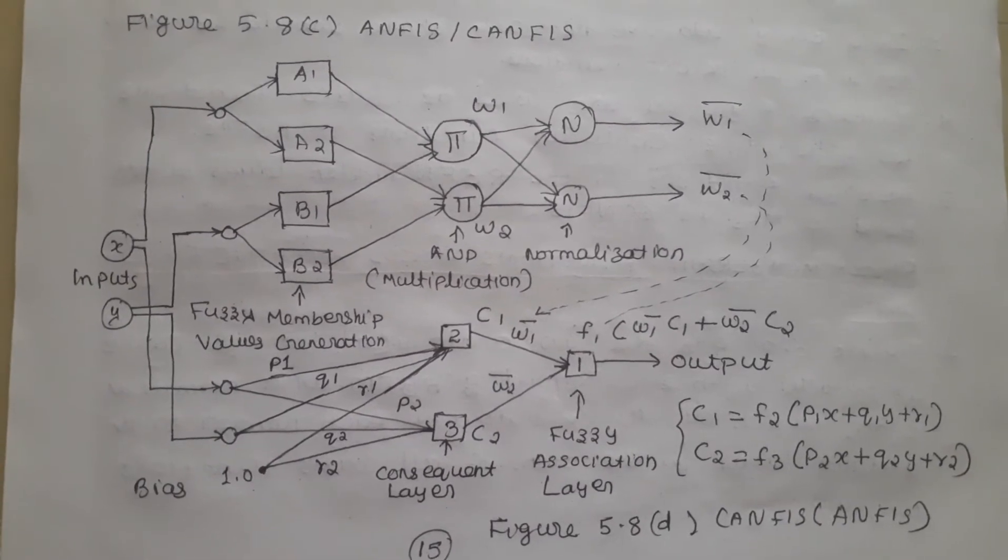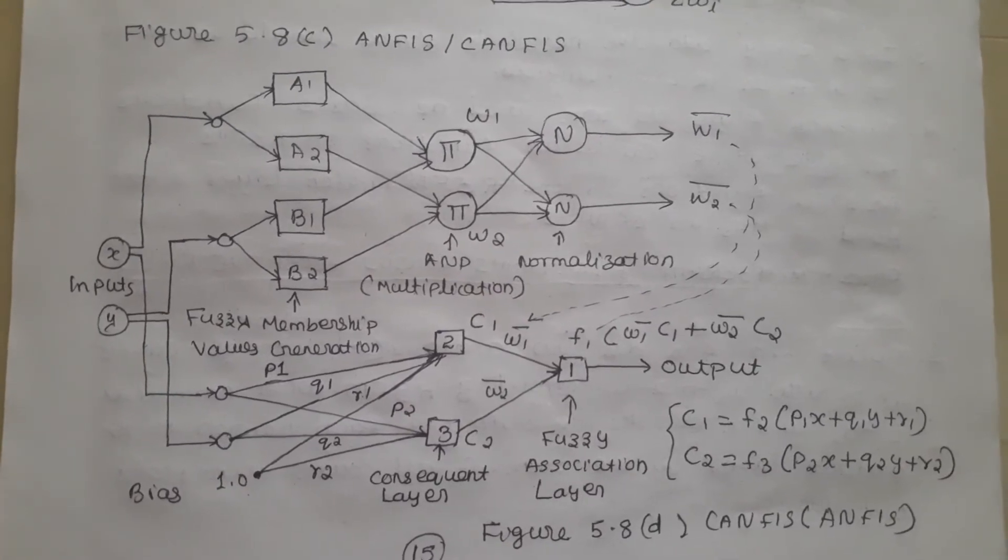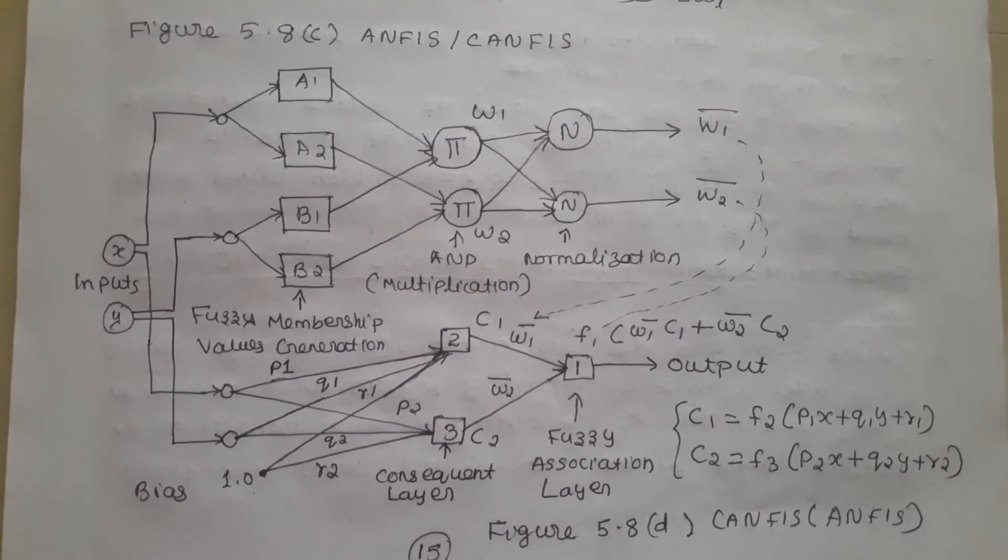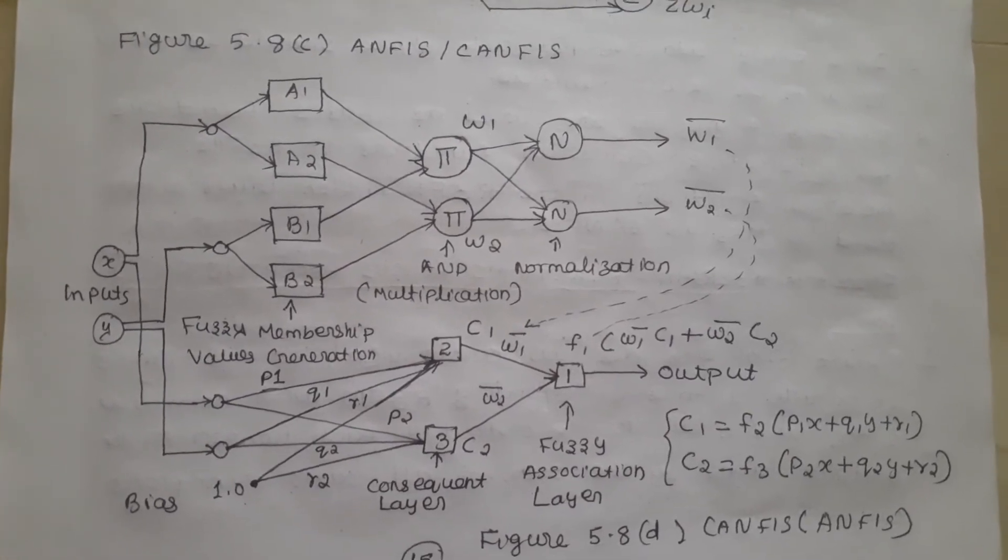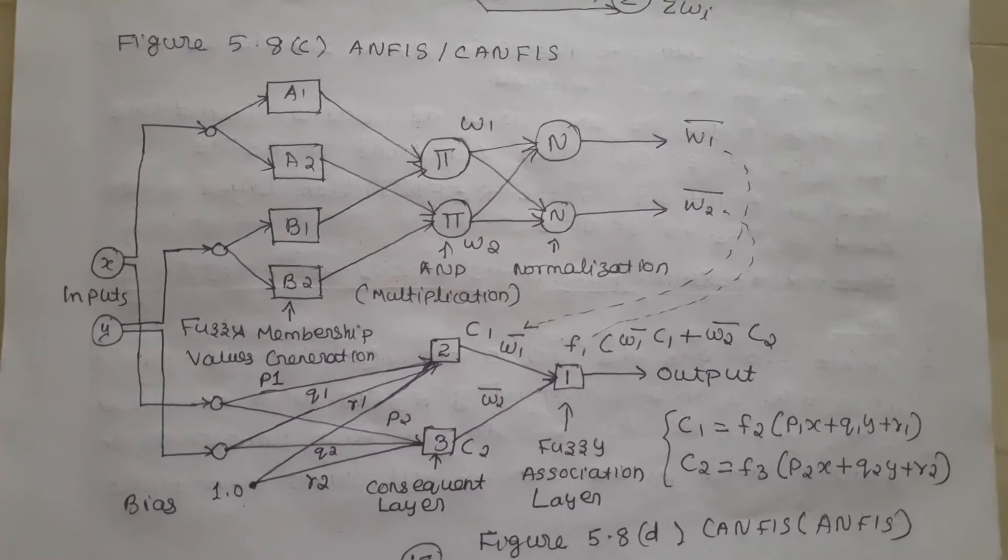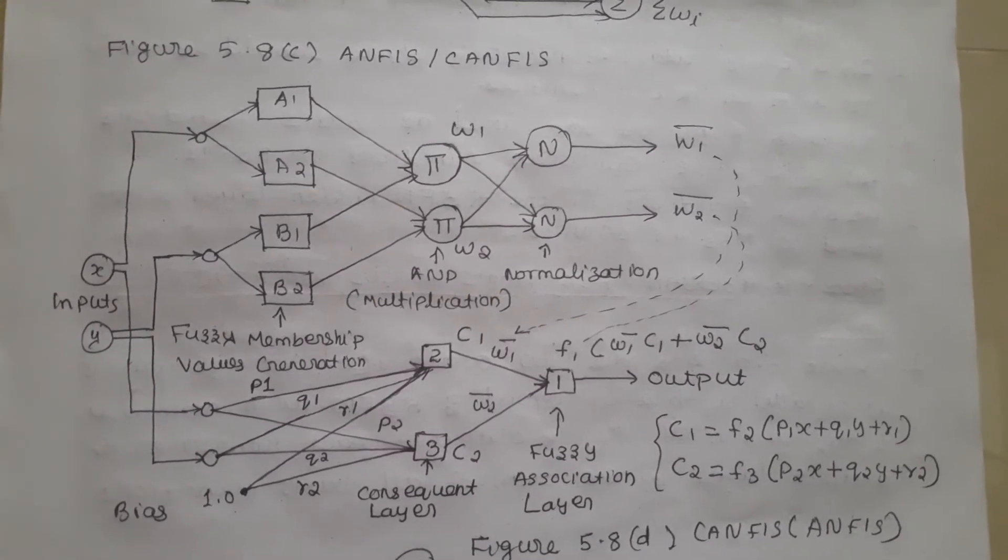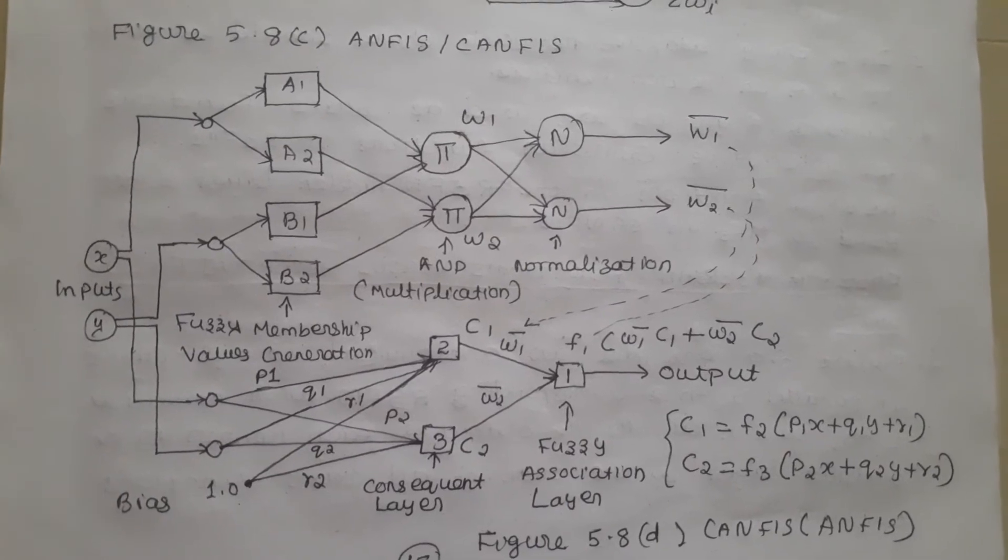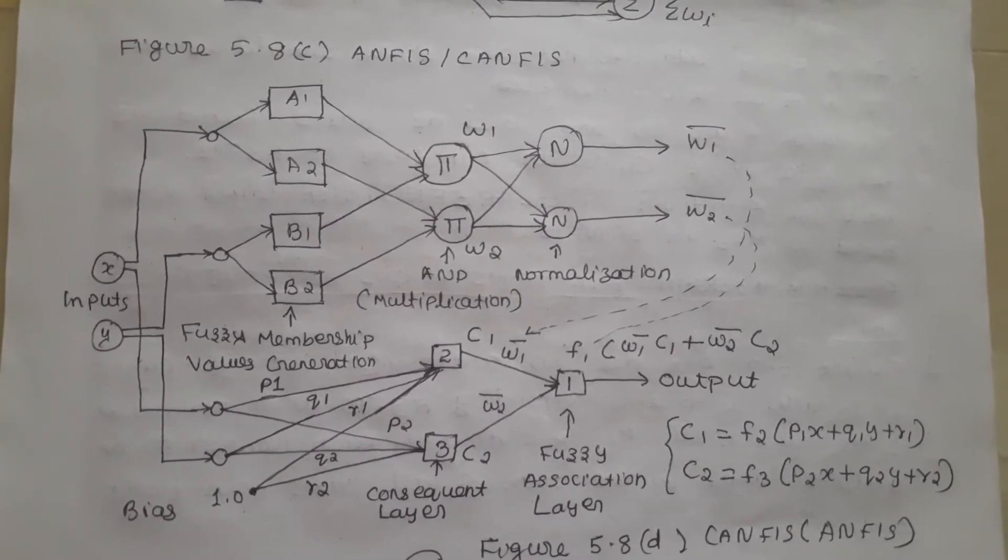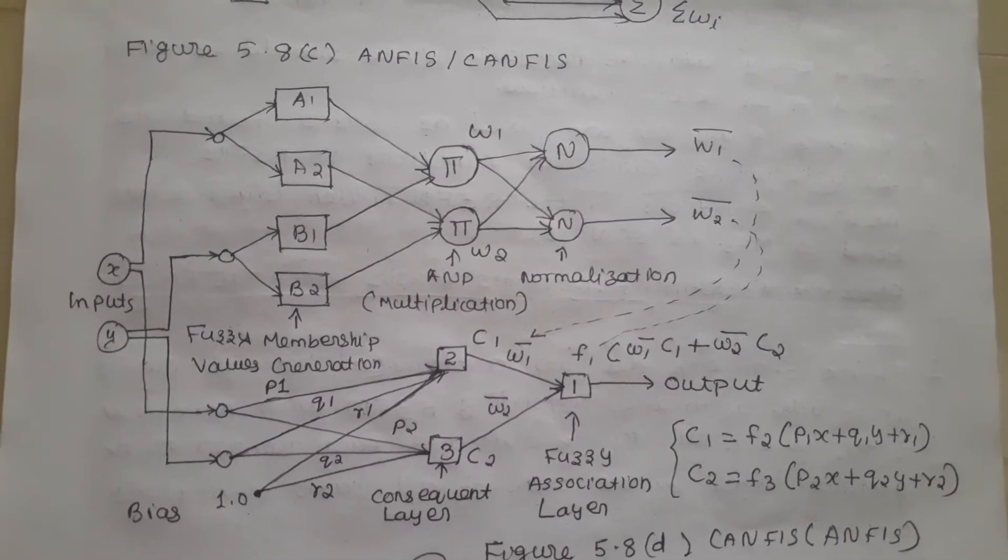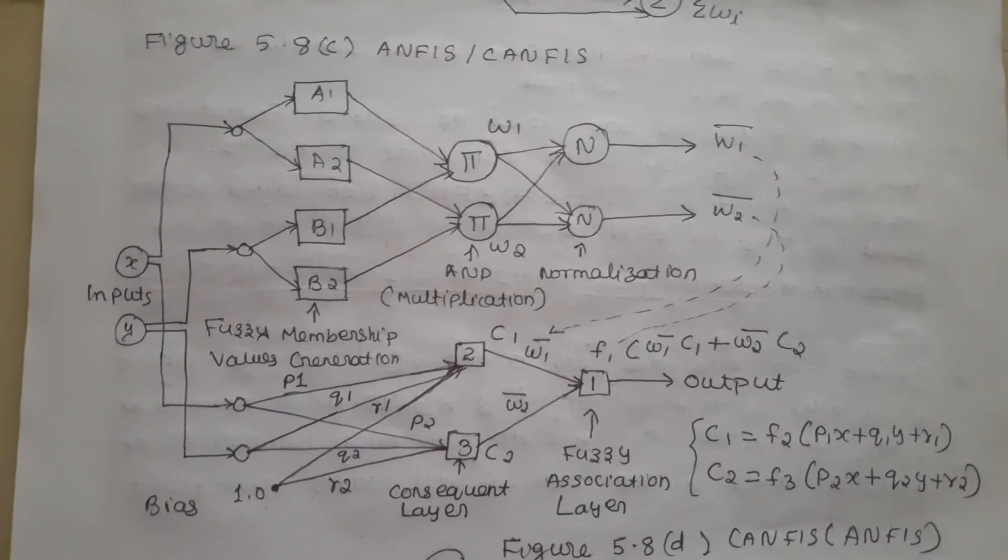Identity function is in the form of F of X is equal to X. The presented CANFIS is equivalent to the Sugeno-fuzzy inference system which accomplishes fuzzy if-then rules such as the following: If X is A1 and Y is B1 then C1 is equal to P1 X plus Q1 Y plus R1.